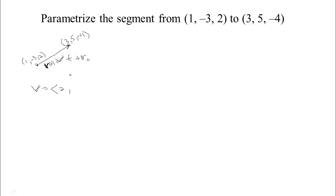In this case, v, let's see, 3 minus 1 is 2. And to go from negative 3 to 5, 5 minus negative 3 is 8. So 2, 8, and negative 4 minus 2 would be negative 6. So there's the vector that would carry you from the starting point to the ending point in one step.